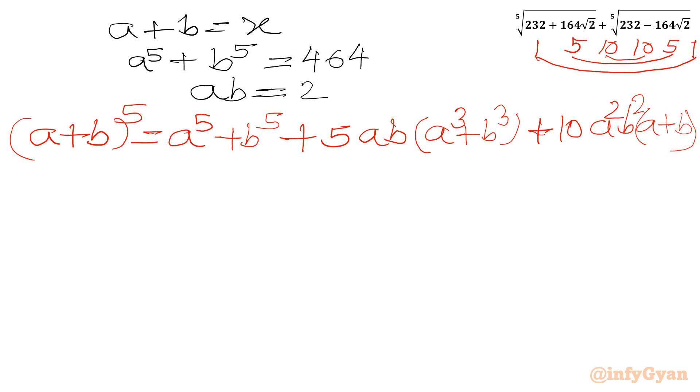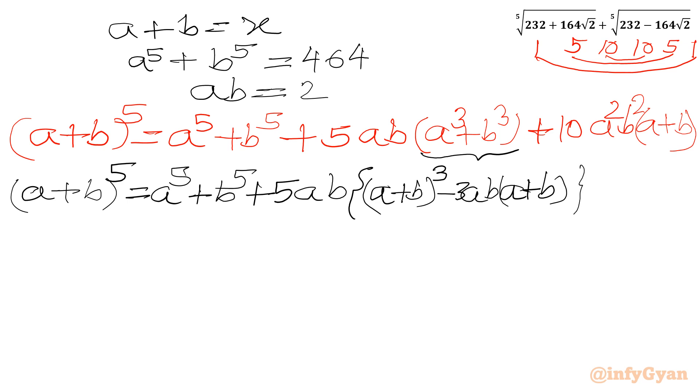Now we can use A cube plus B cube identity or formula here. So we can write A plus B whole power 5. This will be equal to A power 5 plus B power 5, plus 5 AB. Now I can write A plus B whole cube minus 3 AB in the bracket A plus B. Then we have 10 A square B square times A plus B. Now we have AB is 2, A plus B is X, and A power 5 plus B power 5 is 464.